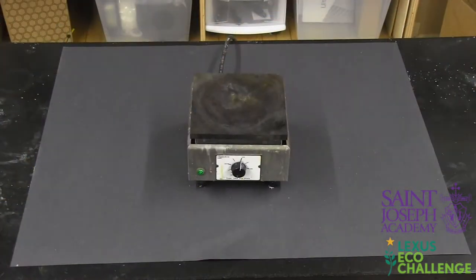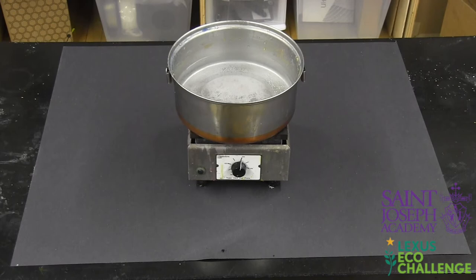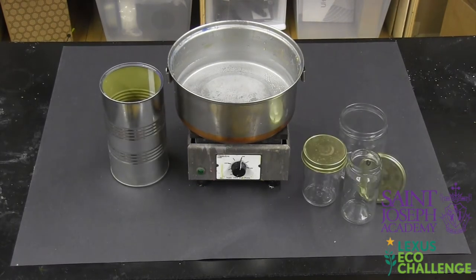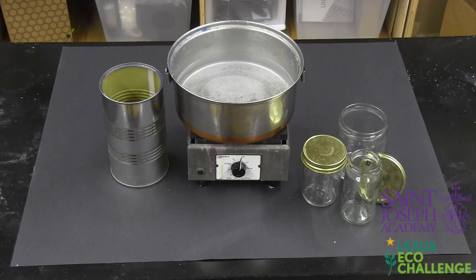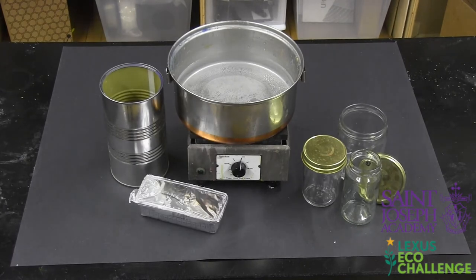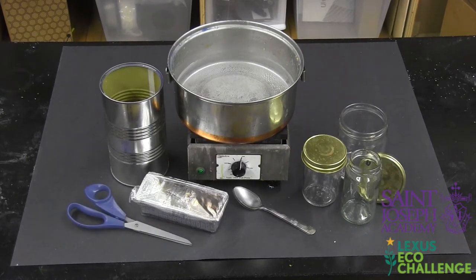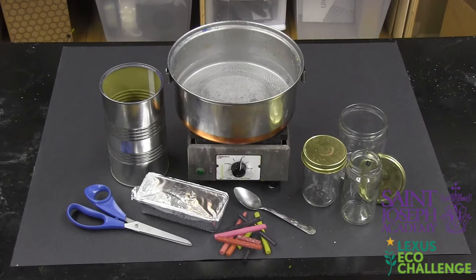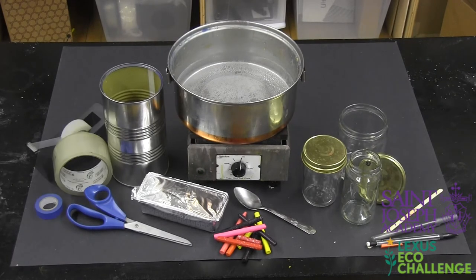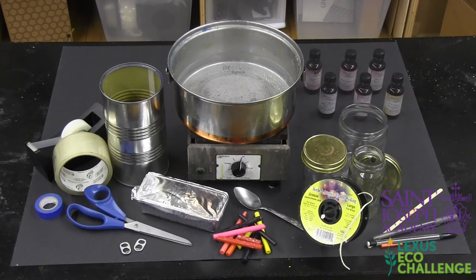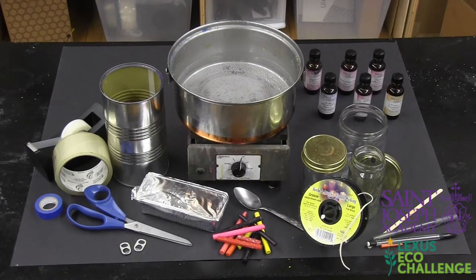You will need a hot plate or a stove, a medium or large pot as shown, an aluminum can, old jars laying around your house such as jam jars and sauce jars, shortening, a spoon, scissors, old crayons laying around your house, a pen, pencil, or wooden popsicle stick, tape of any kind, wick, pop tabs if your wick doesn't have the metal base, and any scent of your choice.